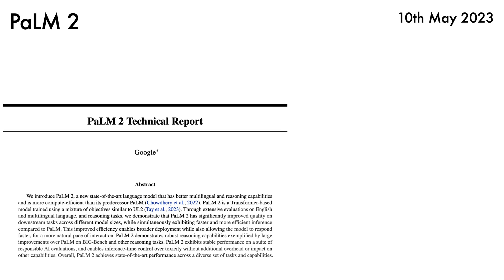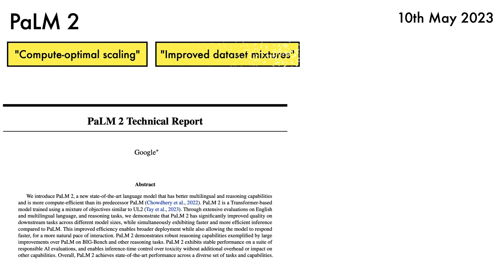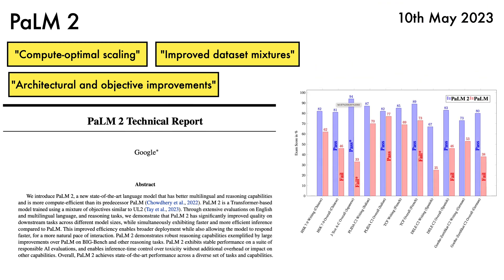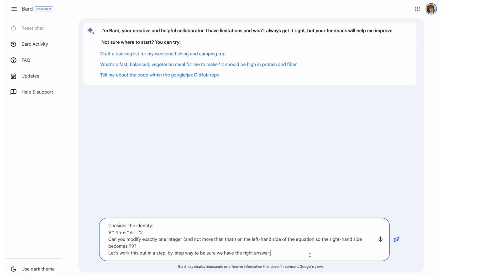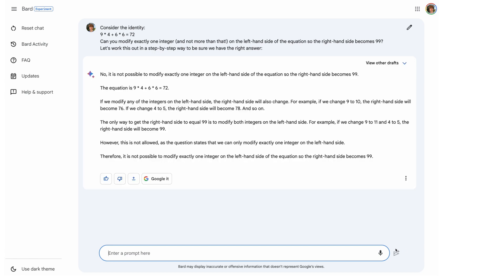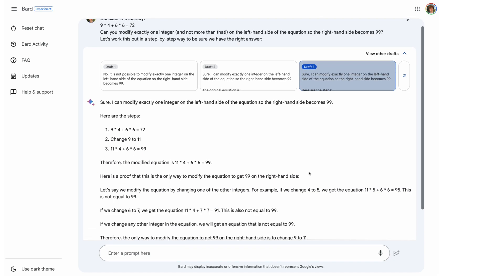Google releases a technical report describing Palm 2, announcing that it now powers many Google products, including Bard. Palm 2 incorporates compute optimal scaling, improved dataset mixtures, and architectural and objective improvements. The authors show that Palm 2 is more competent than Palm across many languages. Let's give the updated Bard a try with a maths problem described in the Sparks of AGI paper that sometimes stumps GPT-4. No, that isn't right, and neither is this draft, or this one.